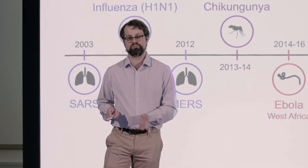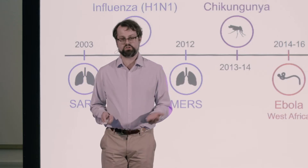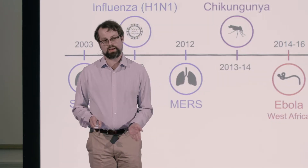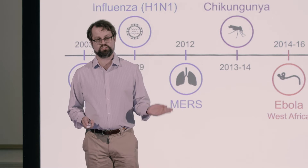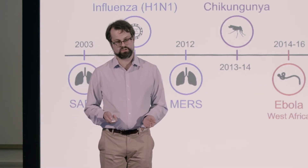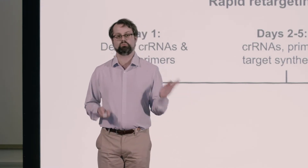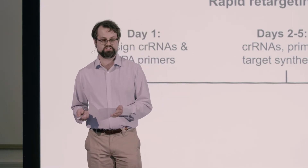This is not just a hypothetical scenario. As you can see, over the last 20 or so years, epidemics and pandemics have occurred with increasing regularity. So we asked ourselves: could we rapidly adapt our system in the face of a new sequence or target? And the answer is yes — it takes about a week or so to retarget our assays.